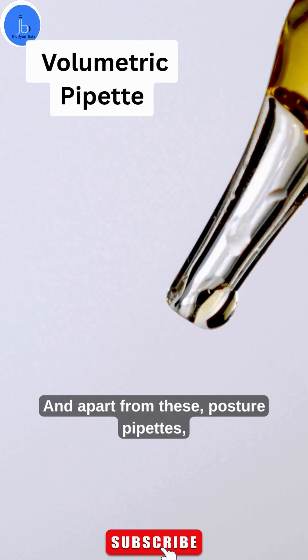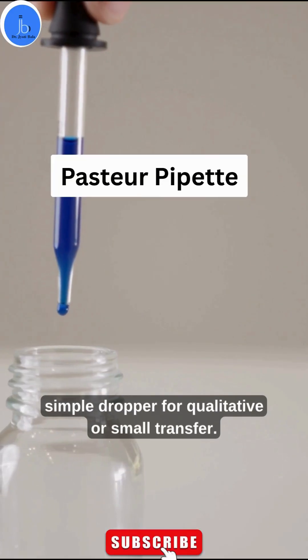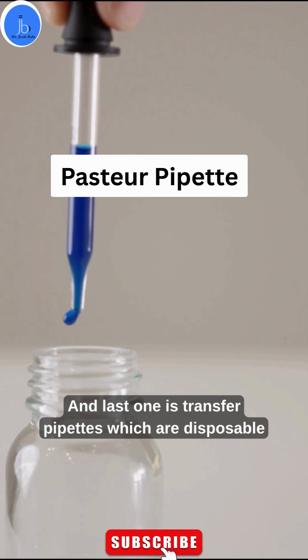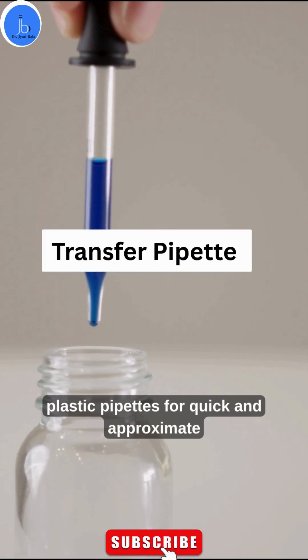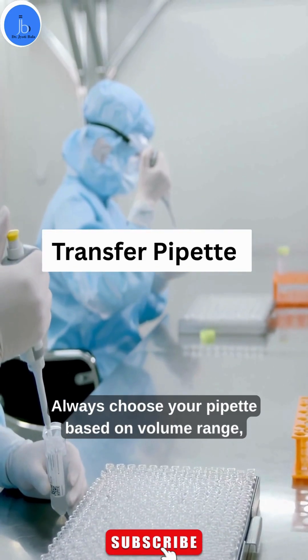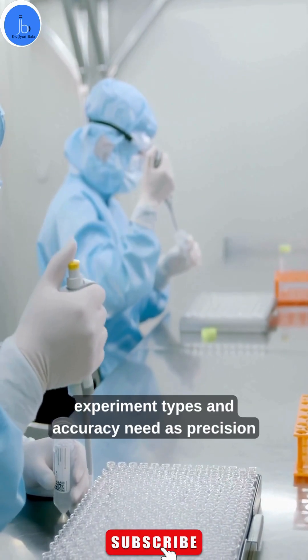Apart from these, Pasteur pipettes are simple droppers for qualitative or small transfers. Transfer pipettes are disposable plastic pipettes for quick and approximate transfer. Always choose your pipette based on volume range, experiment type, and accuracy needs.